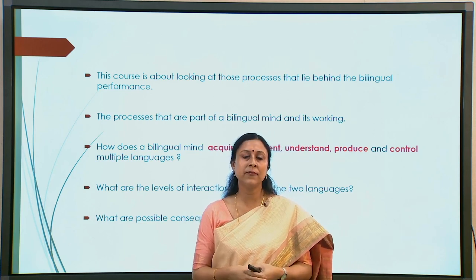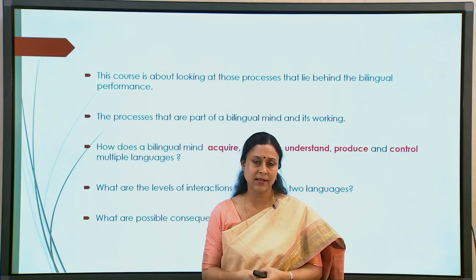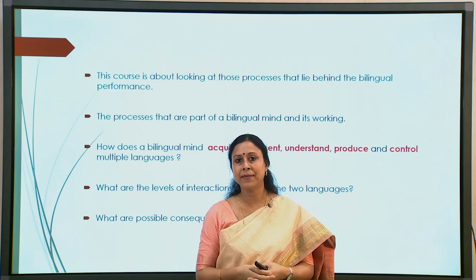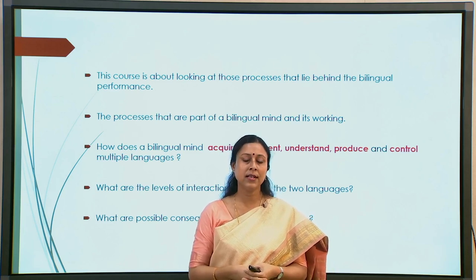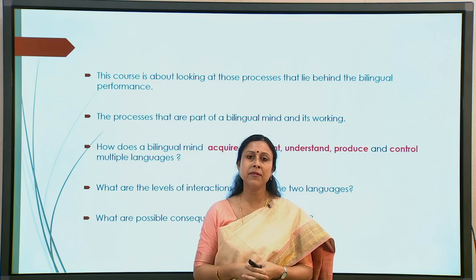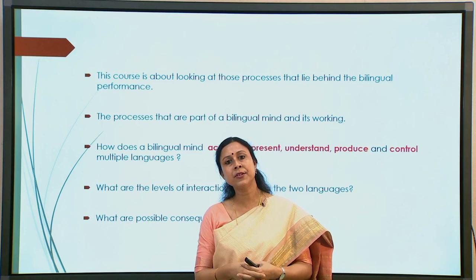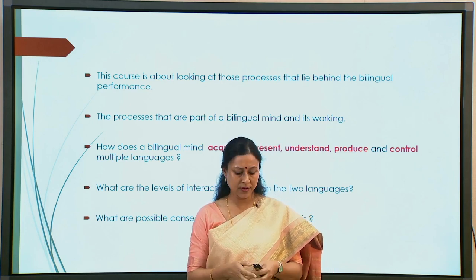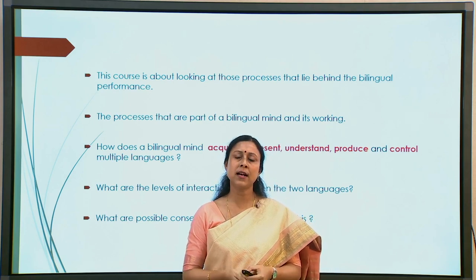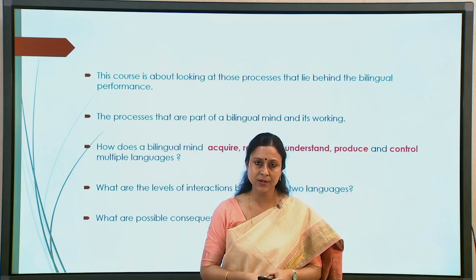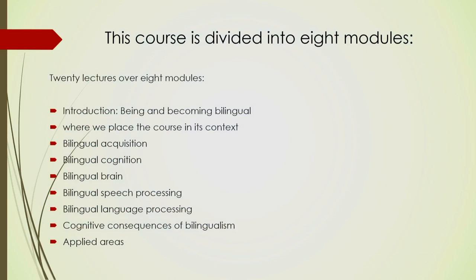Is a bilingual a different animal than a monolingual? That is the basic question. Is there a consequence? Do we have a cost or do we have some advantages? So, basically consequences. Three levels of investigation we will be looking at: one is the process level, then the interaction level between two languages, and then of course the consequences. These are the areas that we will be looking at primarily in this course. To look at these various aspects, we have divided the 20-lecture course into 8 modules.